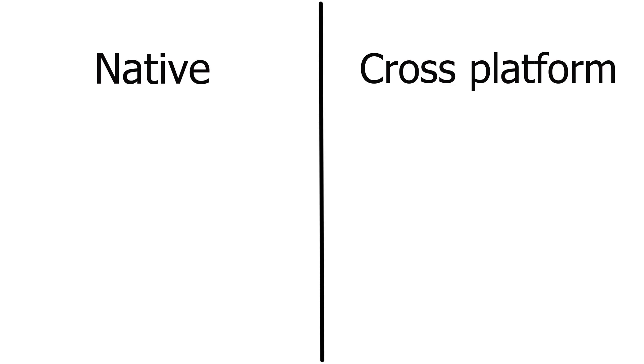For those of you who don't know what I'm talking about — don't know what React is, don't know what Flutter is, don't know what 'native' means — when it comes to mobile development you have kind of two choices. Native mobile development means you are developing for the platform itself, for the Android operating system, which is a Linux operating system. Android is built on top of it by Google. That's why they call it native — it's native to the platform.